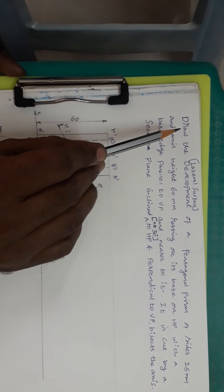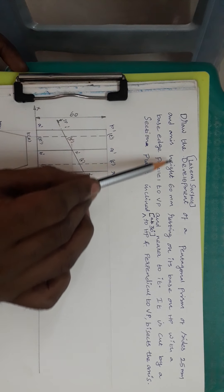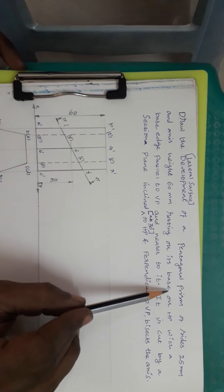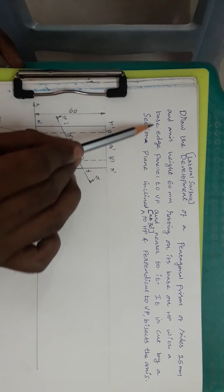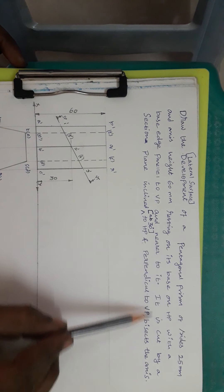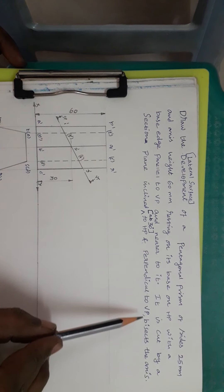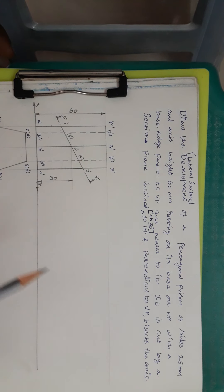Now the question is draw the lateral surface development of a pentagonal prism of sides 25mm and axis 60mm resting on its base on HP with a base edge parallel to VP and nearer to it. It is cut by a section plane inclined at 30 degrees to HP and perpendicular to VP and bisects the axis.